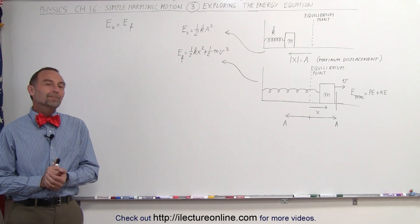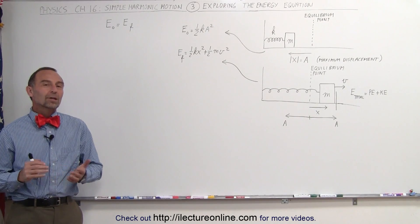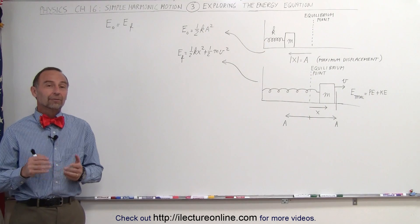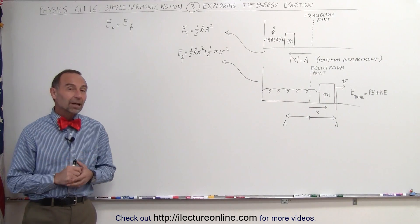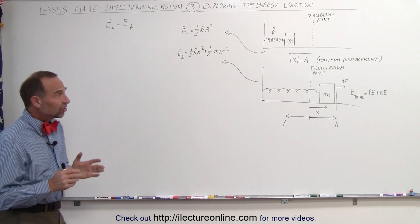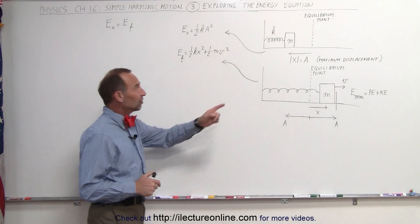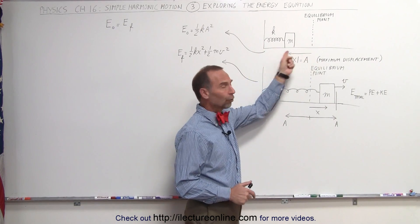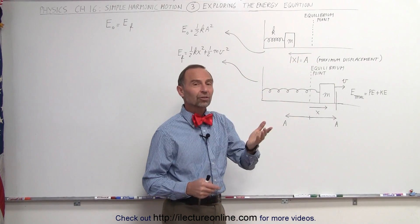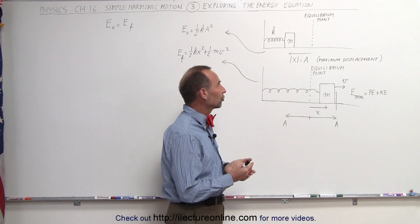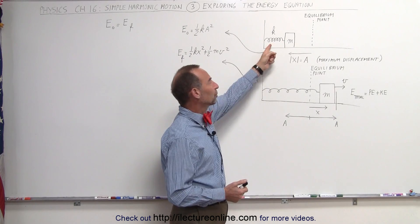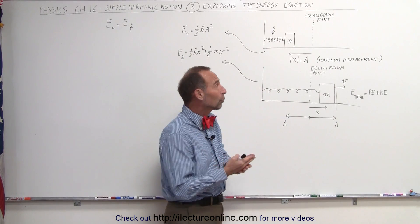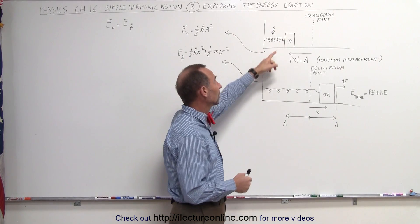Welcome to ElectronLine. Let's go and explore the energy equation a little bit more now for simple harmonic motion. The concept is that we have a spring and a mass. Let's assume that the surface is frictionless so that no energy loss is in the motion, and that the spring being compressed and elongated also does not require any additional energy.